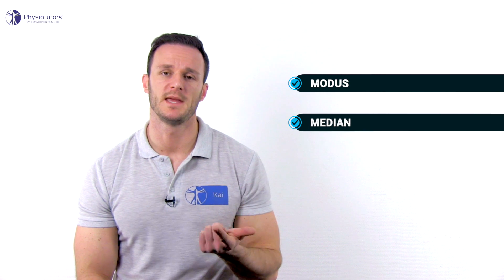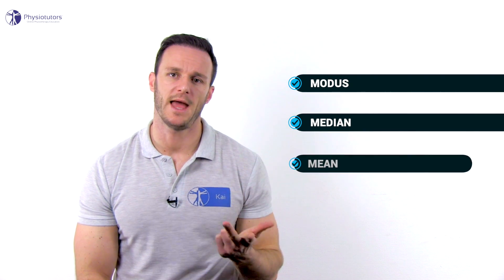The goal of descriptive statistics is to gain a better overview of the acquired data and to present it in a clear manner. The most common measures of central tendency used to describe data on different measurement scales are the modus, median, and mean.